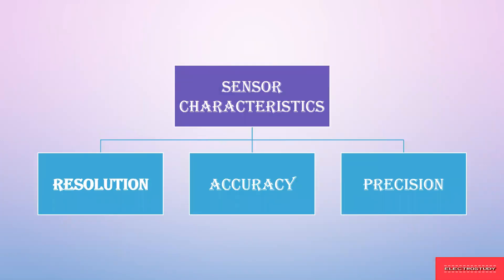When dealing with sensor characteristics, the characteristic is divided into three: resolution characteristic, accuracy, and precision.